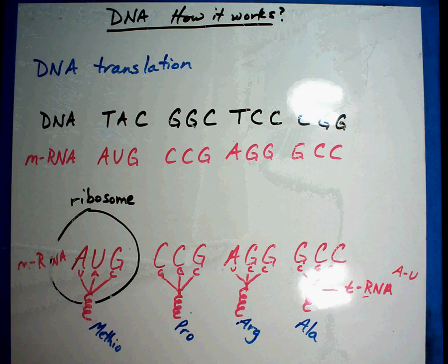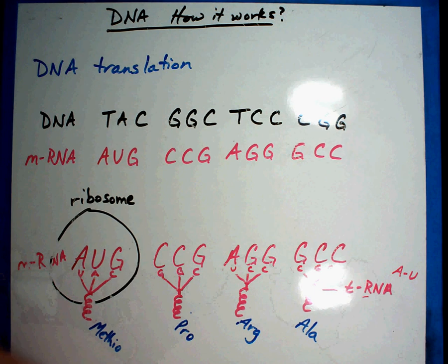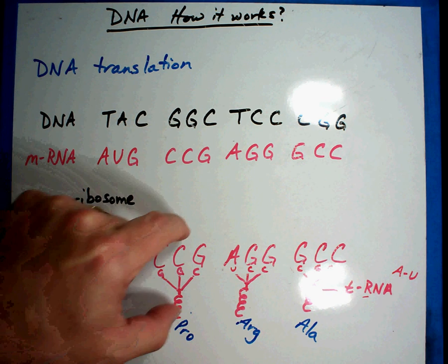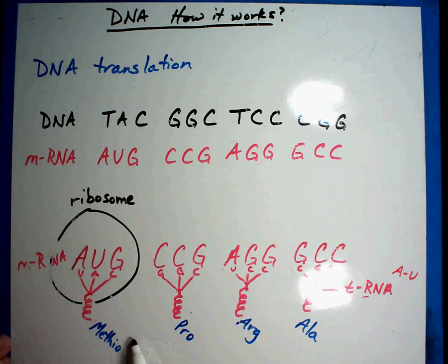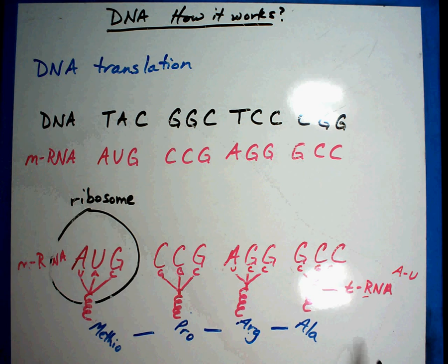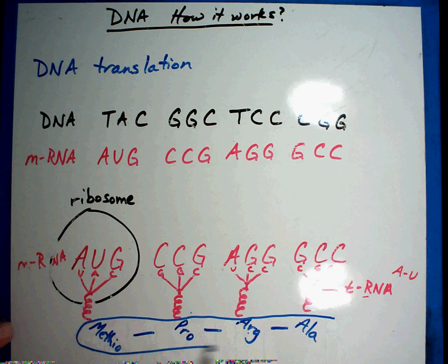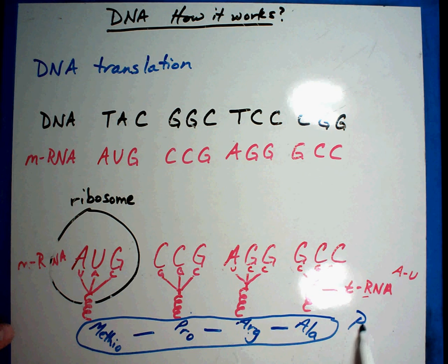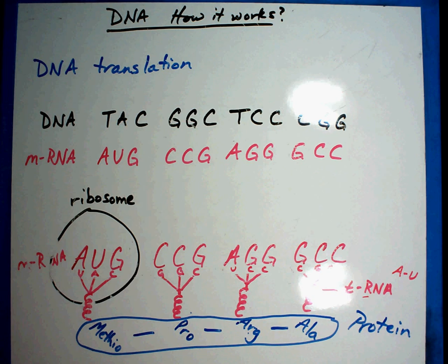And so what happens is when you slide it through the ribosome very quickly, we're doing it very slow, but very quickly it's going to read in groups of three. And when it reads, methionine hooks onto this and hooks onto this and hooks onto proline and arginine and alanine. And when it gets to the very end, it stops making it. And this group right here in blue is the protein. And the protein tells the cell exactly what it wants it to do.